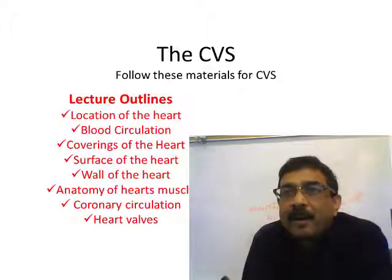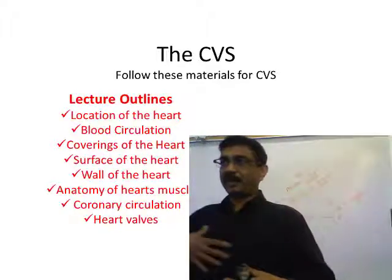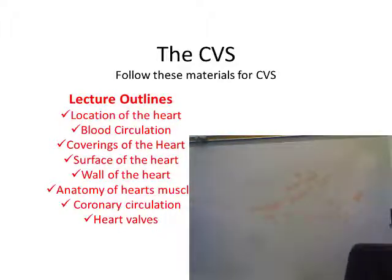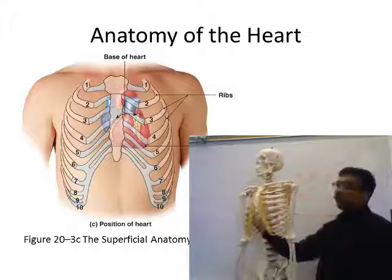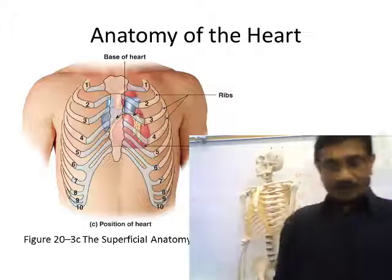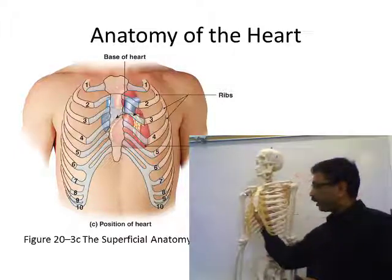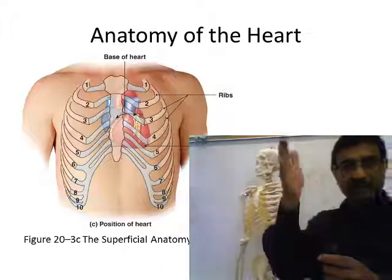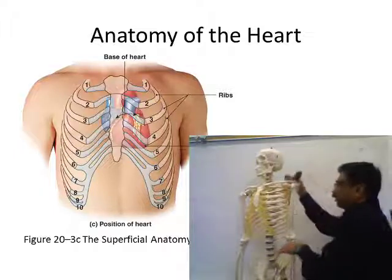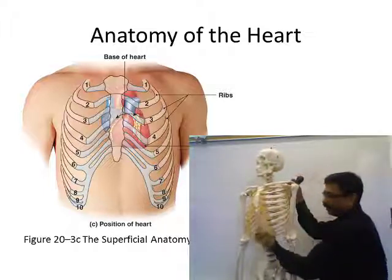The heart is located in the thoracic cavity — inside the thorax. Heart is located inside the thoracic cavity in between two lungs, and about two-thirds of the heart is located on the left side and one-third goes to the right side. That's why we say the heart is mostly located on the left side. The heart rests on the diaphragm.